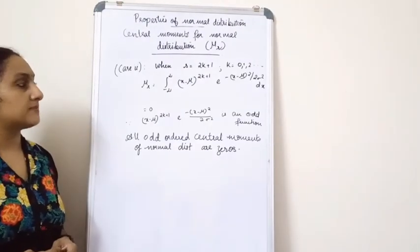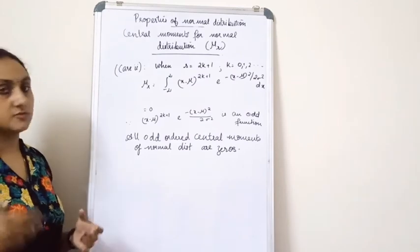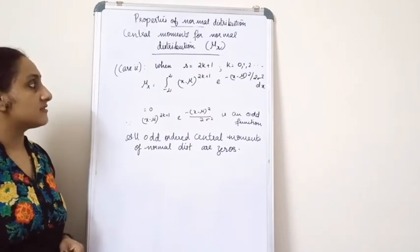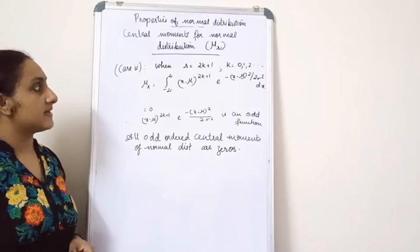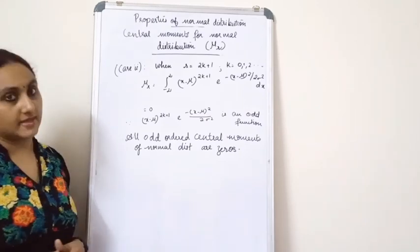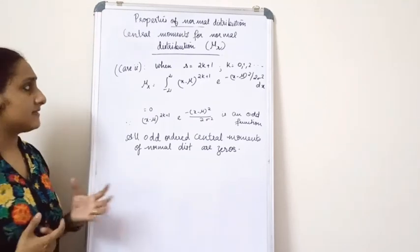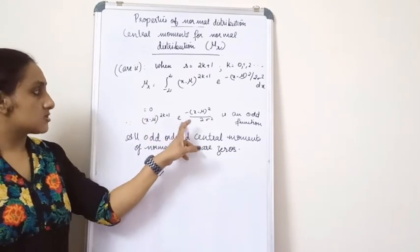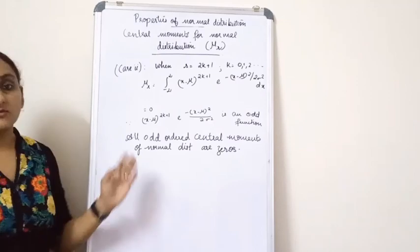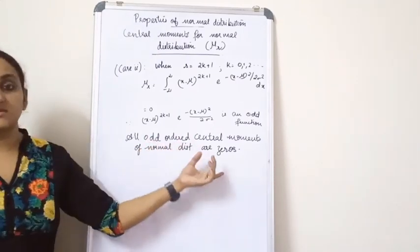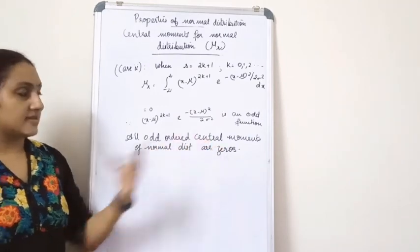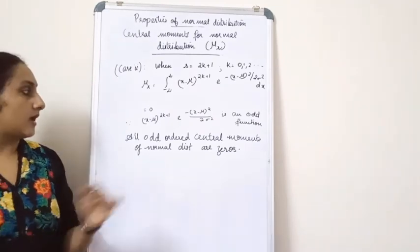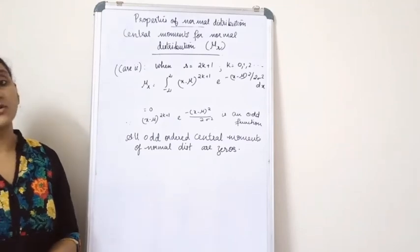Case 2 is when r equals 2k plus 1, that is when k takes the values 0, 1, 2, 3, etc. Here, mu_r equals the integral minus infinity to plus infinity of x minus mu the whole raised to 2k plus 1, times e raised to minus x minus mu the whole square divided by 2 sigma square dx. This equals 0, because x minus mu raised to 2k plus 1 times e raised to this term is an odd function. Hence, all odd-ordered central moments — mu_1, mu_3, mu_5, etc. — are zero for a normal distribution.